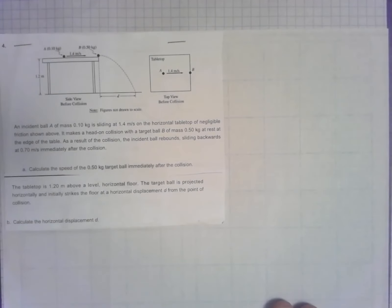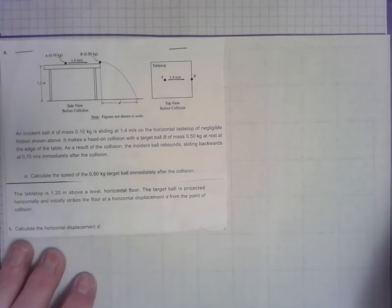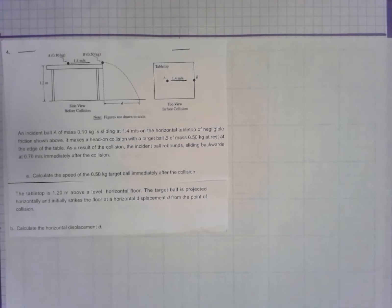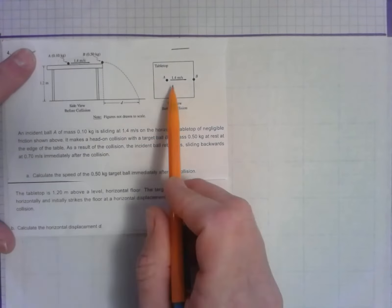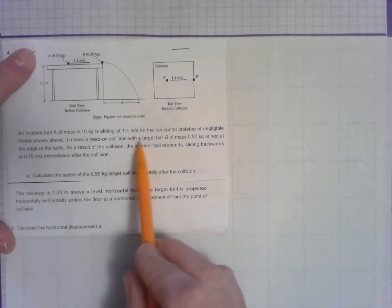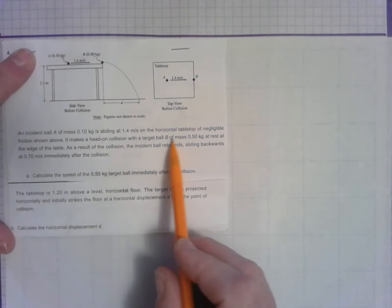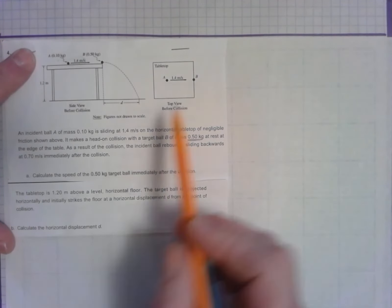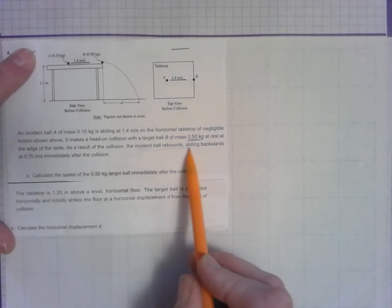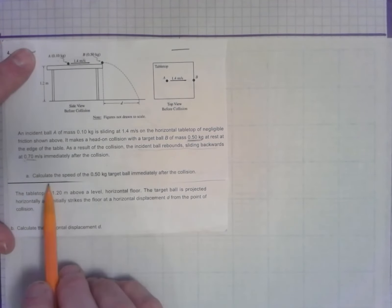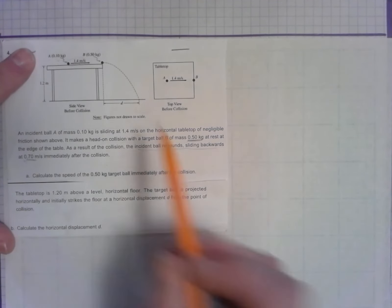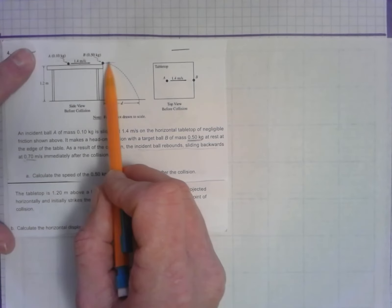The problem starts with a head-on collision. An incident ball of mass 0.1 kilograms moving at 1.4 m/s comes in and hits ball B. There's negligible friction. Ball B has a much larger mass of 0.5 kilograms. As a result of the collision, the incident ball slides backwards at 0.7 m/s. We need to calculate the speed of the 0.5-kilogram ball after the collision.